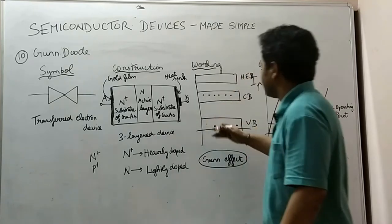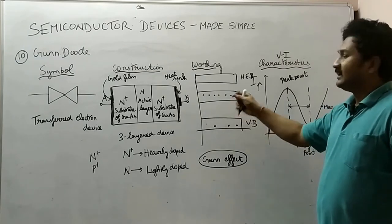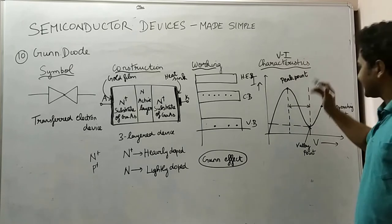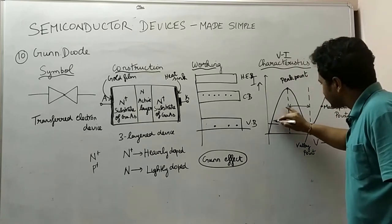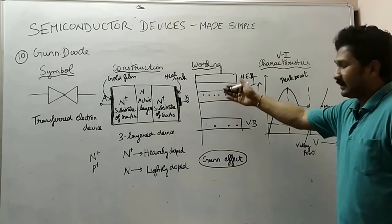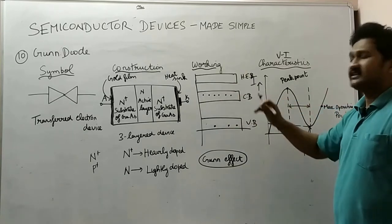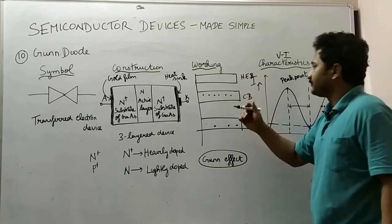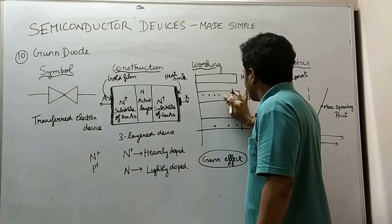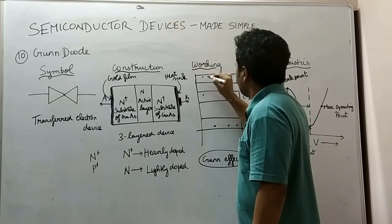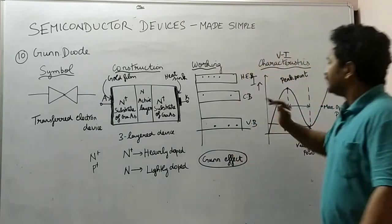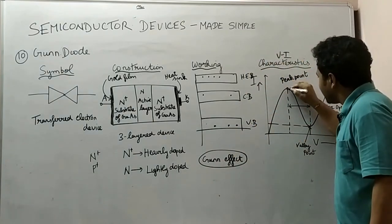Electrons move from the valence band to the conduction band when the external voltage is applied and increased. Looking at the characteristics in parallel: the current starts to increase from zero up to a peak point as the external voltage is increased. When the voltage is further increased, electrons move from the conduction band to the higher energy band, and the current reaches a peak point.